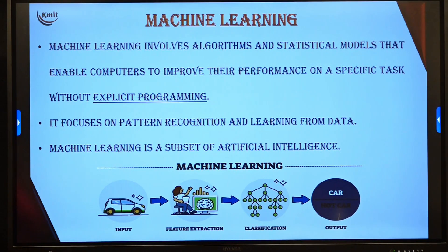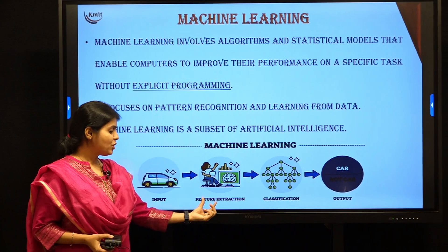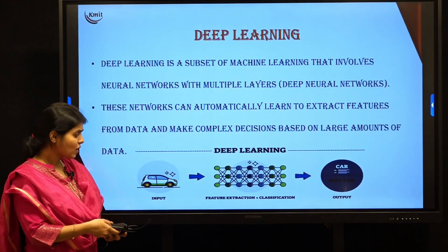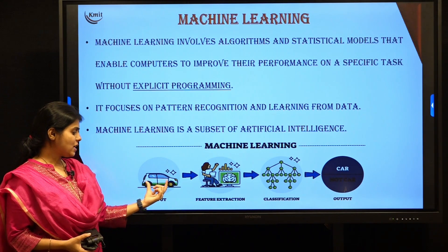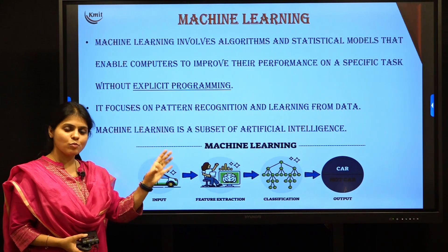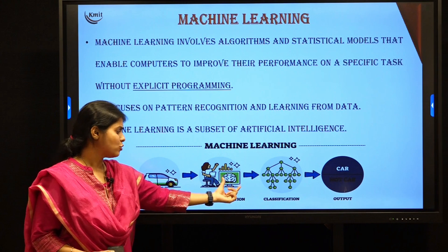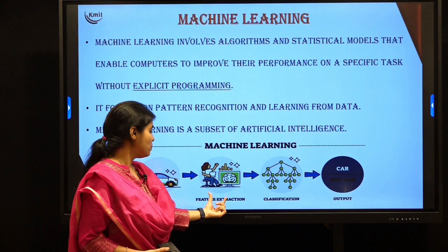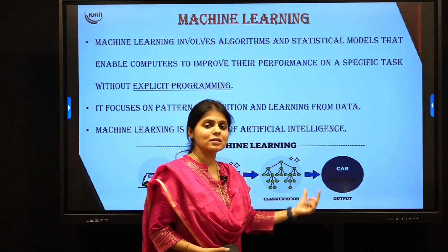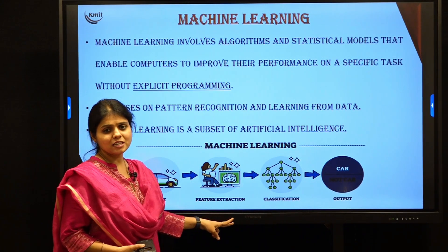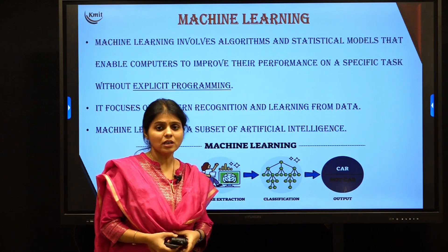Machine learning is a subset of AI. As you can see in the figure, I have an input which is an image of a car. In machine learning, feature extraction is done by a programmer — if you want to identify this image as a car, you specify features like four wheels, the body dimensions, and so on. Then we apply a classification algorithm to determine whether it is a car or not. So there are two important steps: feature extraction and applying an algorithm to produce the output.